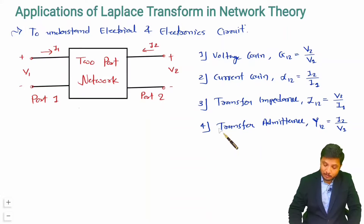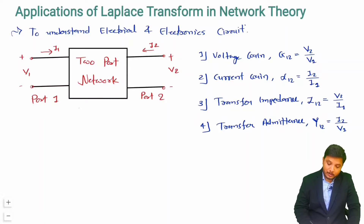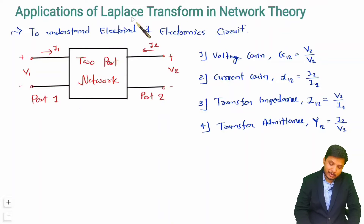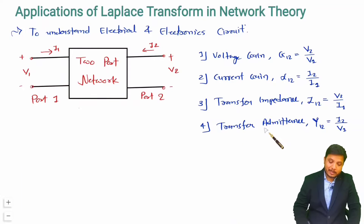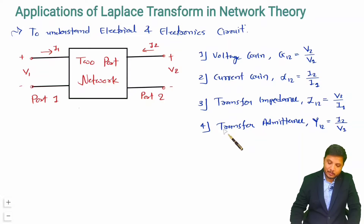To find all these parameters, we convert the two-port network into a Laplace transform network and then apply KVL and KCL to identify voltage gain, current gain, transfer impedance, and transfer admittance. In the next few videos I will give you two problems in which all these queries will be resolved — showing how we can solve for all these parameters.